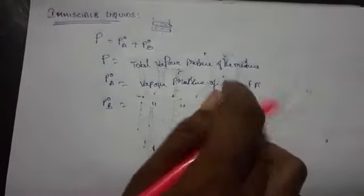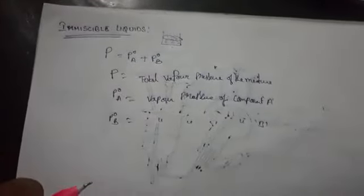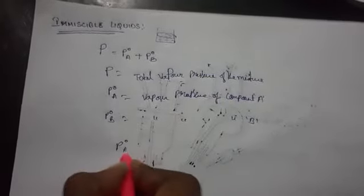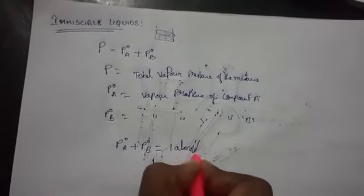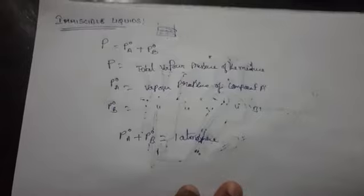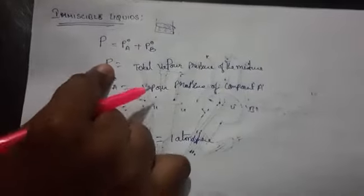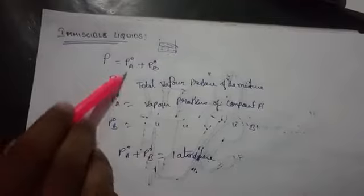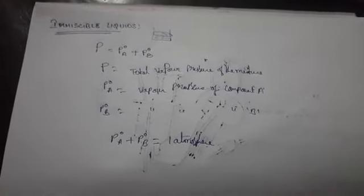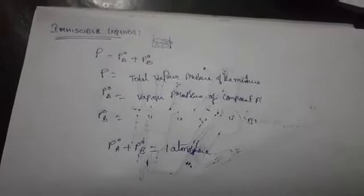Generally, the normal boiling point is the temperature at which total vapor pressure becomes equal to atmospheric pressure. So we can say P°A + P°B equals one atmosphere. The total vapor pressure of the mixture equals one atmospheric pressure at the normal boiling point.